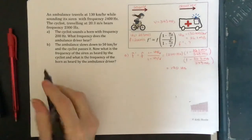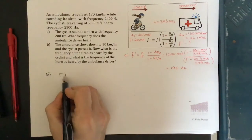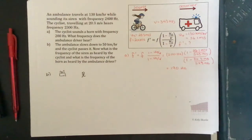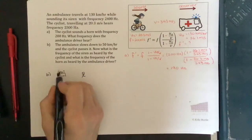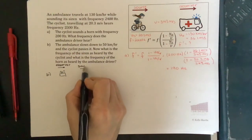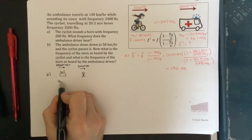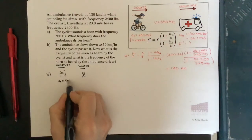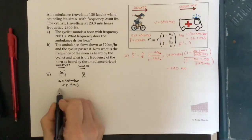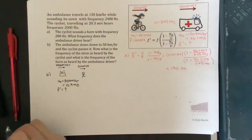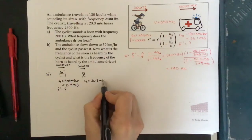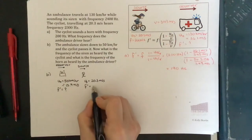Let's draw a picture of what's happening in part B. Now the ambulance is in the back and the cyclist is in the front. Let's first ask what the ambulance driver hears, making the ambulance the observer and the cyclist the source. The observer's speed is 50 kilometers per hour, which converts to 13.9 meters per second. The speed of the source is the cyclist's speed, 20.3 meters per second, and the source frequency is 200 hertz.